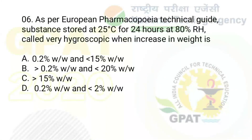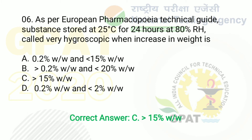The question: as per European Pharmacopoeia technical guide, a substance stored at 25°C for 24 hours at 80% relative humidity is called very hygroscopic when the increase in weight is. Option A: 0.2% w/w and less than 15% w/w. Option B: more than 0.2% w/w and less than 20% w/w. Option C: more than 15% w/w. Option D: 0.2% w/w and less than 2% w/w. The right answer is option C — more than 15% weight by weight.